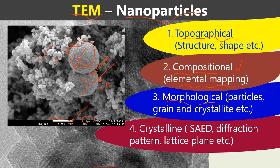Morphology means how particles, grains, or crystallites look. TEM also provides information about the crystalline nature of a material — we get a diffraction pattern and information about lattice planes, specifically the distance between two planes. We will also explain this in this video.